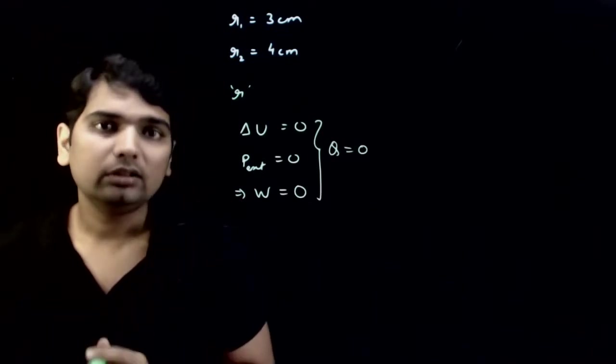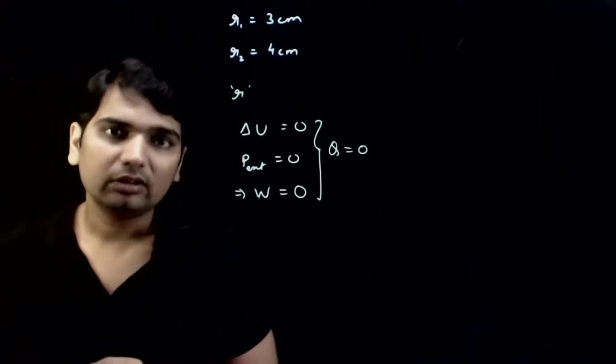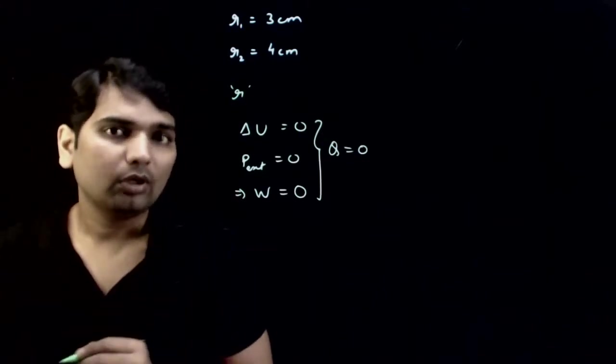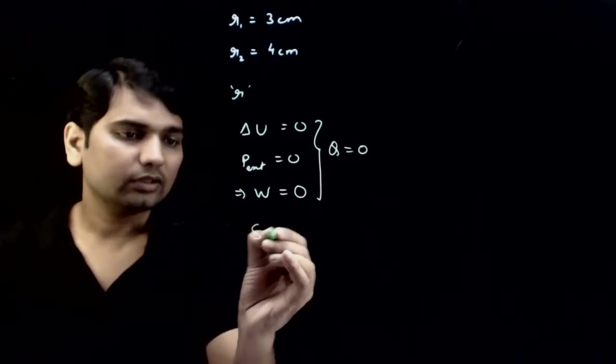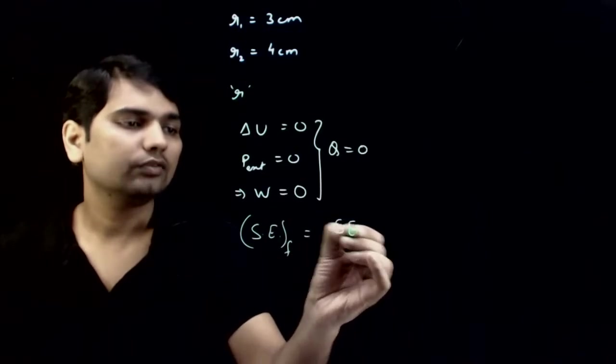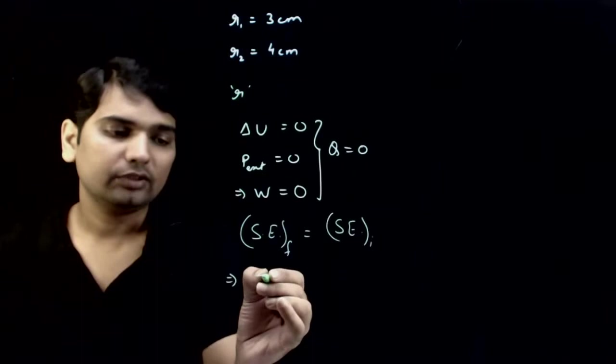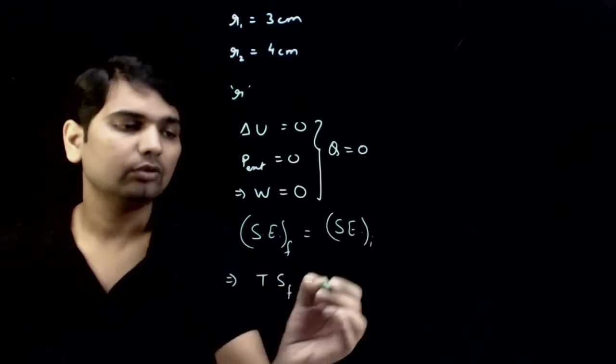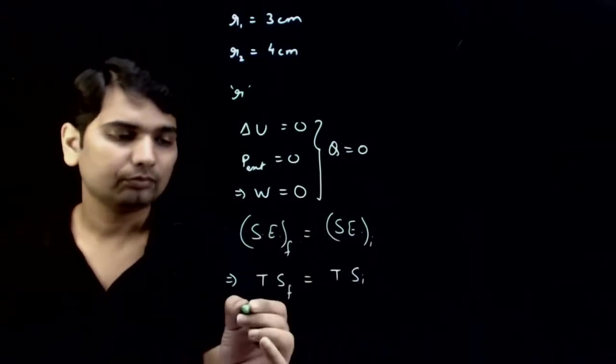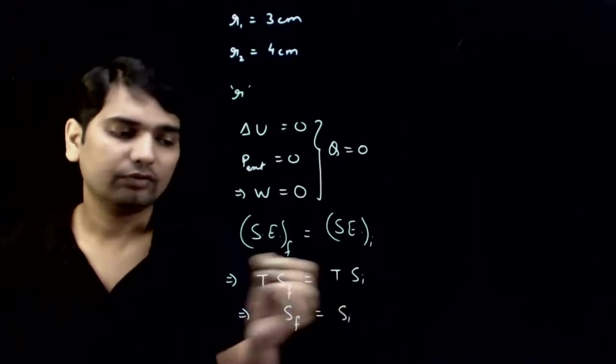Your final surface energy is equal to initial surface energy. This implies surface tension multiplied by final surface area is equal to surface tension multiplied by initial surface area, which implies final surface area is equal to initial surface area.